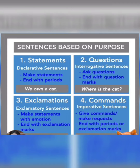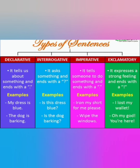It may be a full stop or an exclamation mark for imperative sentences. A declarative sentence tells about something and ends with a full stop — for example, 'My dress is blue.' An interrogative sentence asks something and ends with a question mark. An imperative sentence tells someone to do something and ends with a full stop — for example, 'Iron my shirt' or 'Wipe the windows.'